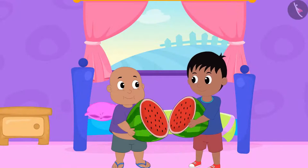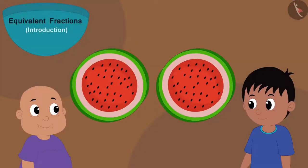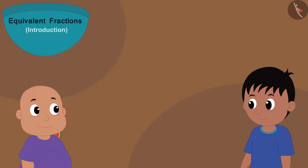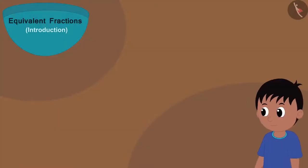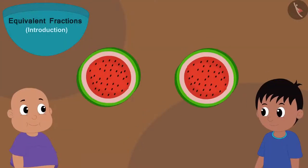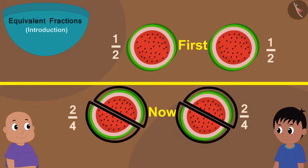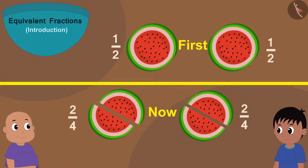Raju told Babalu that this portion is too big and he cannot eat it. So Raju cut those two big pieces into two equal parts each. In this way, now the watermelon has four equal parts. Babalu gave two parts of them to Raju. Earlier Raju and Babalu were each getting one part out of two equal parts, and now there are four parts and they are both getting two parts each.